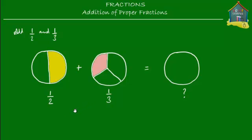Let's find the multiples of two and three. The multiples of two are: 2, 4, 6, 8, 10, 12, 14 — this is the multiplication table for two.